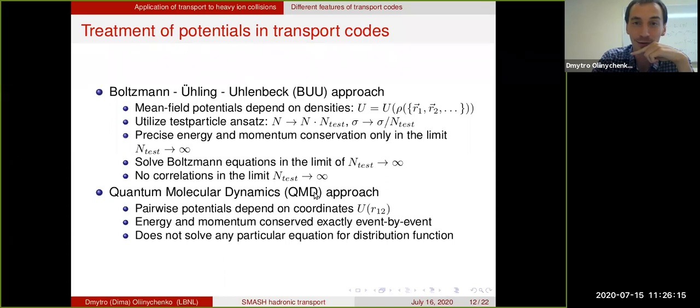Then there is a QMD approach. The essential difference between these two approaches is in the way you treat potentials. The treatment of collisions in the right part is the same or can be the same. It doesn't really affect the title. What's really important is the way you are treating potentials. In BUU, your potentials depend on the local density. In QMD approach, potential depends on the pairwise coordinates.